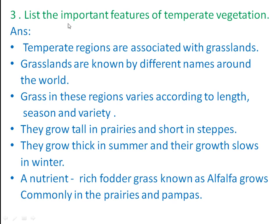Third question: list the important features of temperate vegetation. Temperate regions are associated with grasslands, which are known by different names around the world. Grass in these regions varies according to length, season, and variety — they grow tall in prairies and short in steppes, thick in summer and slower in winter. A nutrient-rich fodder grass known as alfalfa grows commonly in the prairies and pampas.